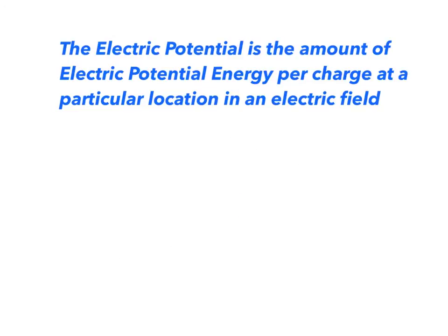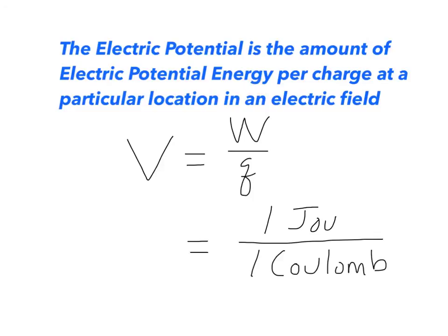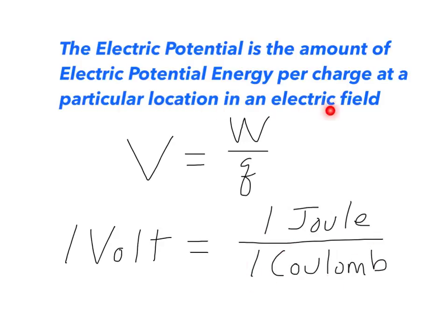Now the units of electric potential are super famous. Electric potential is equal to the amount of energy or work done per charge to put a charge at a particular location in an electric field. So if I had one coulomb of charge at a particular location in an electric field, and the potential energy at that point was one joule, we would say that the electric potential at that point is one volt. So one volt means an energy of one joule for every coulomb of charge at a particular location in an electric field.